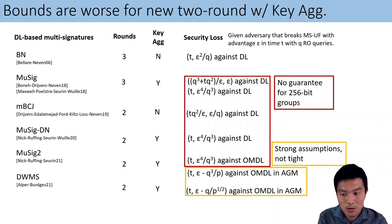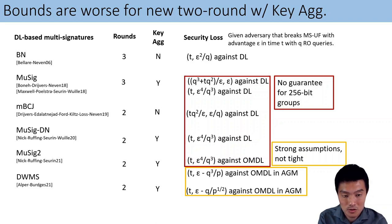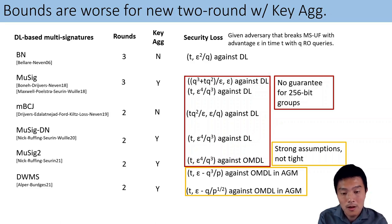The last two rows in our table are results derived in the algebraic group model (AGM), because there are actually no known standard model reductions that can be given for those schemes. Therefore, these works resorted to AGM to prove security. However, even in idealized models, they were not able to prove tight security.